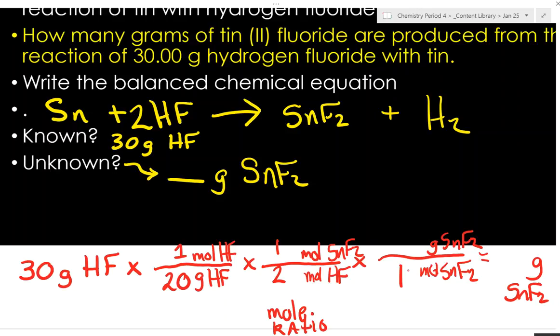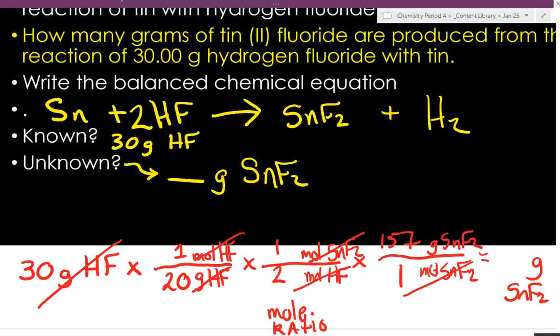Now we want to get to grams of SnF2 from moles of SnF2. That gets a 1. We got 19 plus 19 is 38 plus tin is 157. Can we cancel stuff out? Grams, grams, moles, moles, moles, moles. 30 times 157 divided by 20 divided by 2. You could simplify this down if you really wanted to.